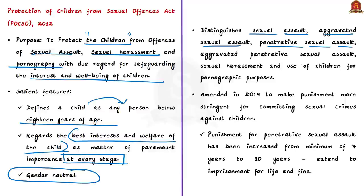The act defines sexual assault to be aggravated under certain circumstances — such as a police officer committing sexual assault on a child within the limits of the police station, or a public servant committing sexual assault on a child, or a staff of a hospital whether government or private committing sexual assault in that hospital, or gang sexual assault on a child. These circumstances are provided in detail under Section 9 of the act. The act prescribes stringent punishment graded as per the gravity of the offense.